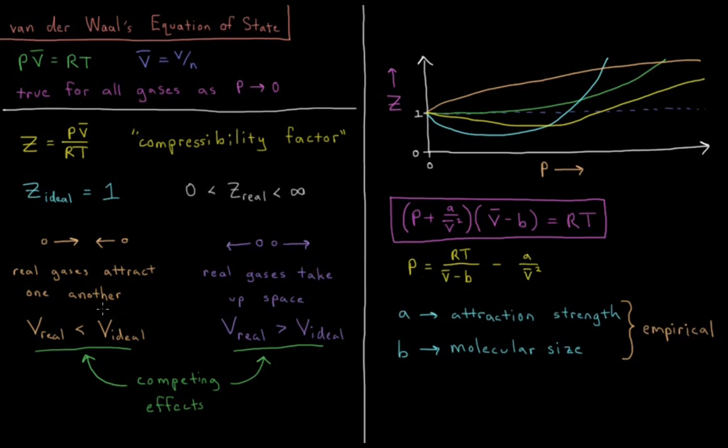A accounts for the attractions of these gases to one another. A is the attraction strength, typically being a positive or zero value. So it's the attraction strength accounting for this effect.